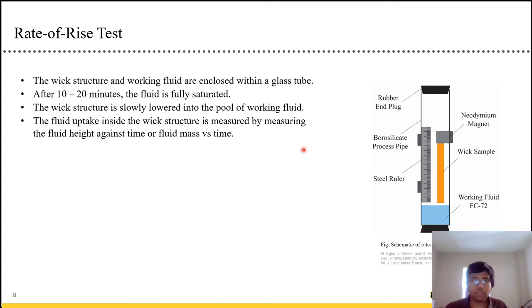This is the actual experimental test setup. So you have a glass tube, you have wick structure, and you have the working fluid. We just wait for 10 to 20 minutes before the fluid is fully saturated. And then you just slowly lower the wick structure into the working fluid. And you measure how fast the fluid rises up the wick structure.